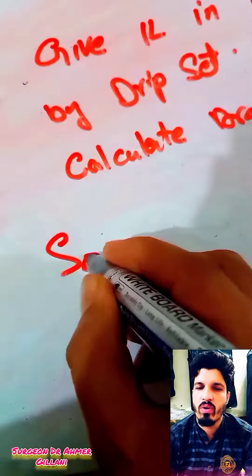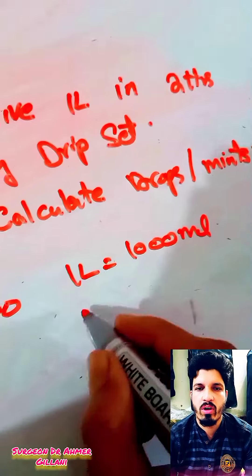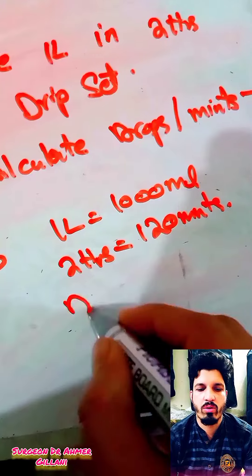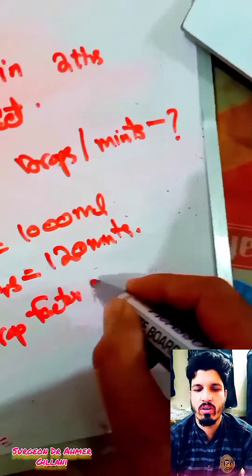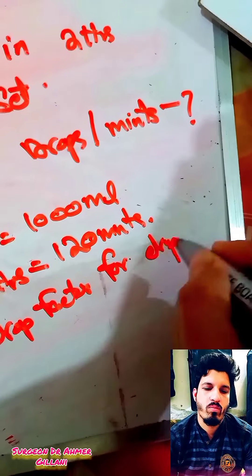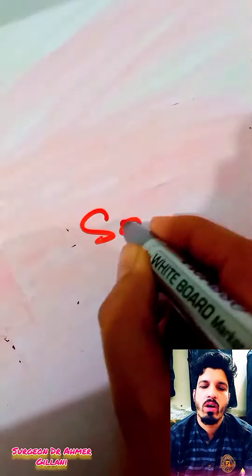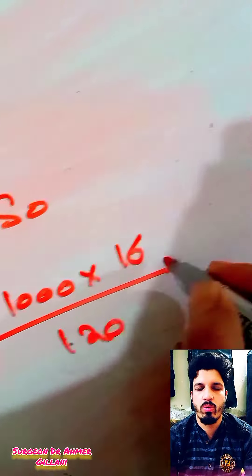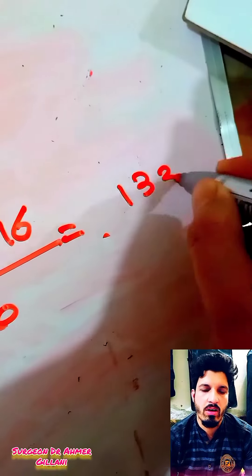So one liter is equal to 1000 ml, two hours is equal to 120 minutes, and we have the drop factor is equal to 16. So 1000 multiplied by 16 divided by 120 is equal to 133.